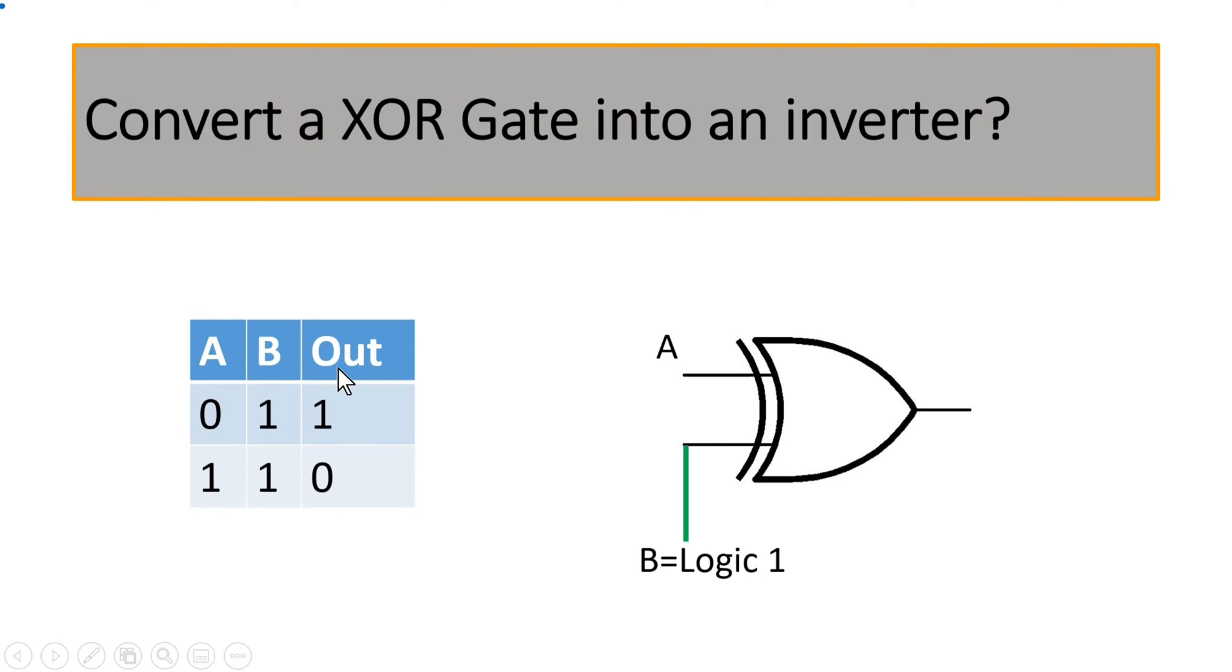It is also quite clear from the truth table of XOR gate. I have tied the value B to 1 and A can be 0 or 1. At the output when A is 0, I will get 1 which is inverted value of A. And when A is 1, output is 0 which is again inversion of the value at A.